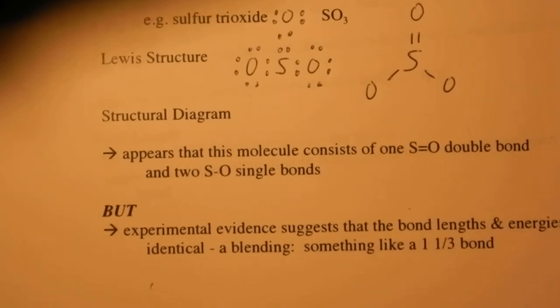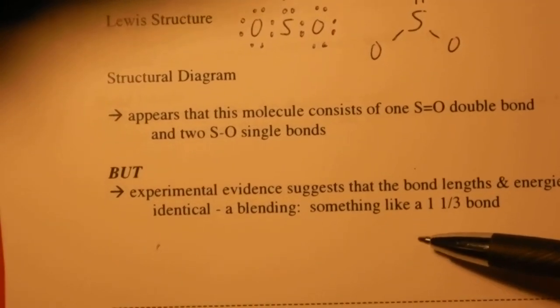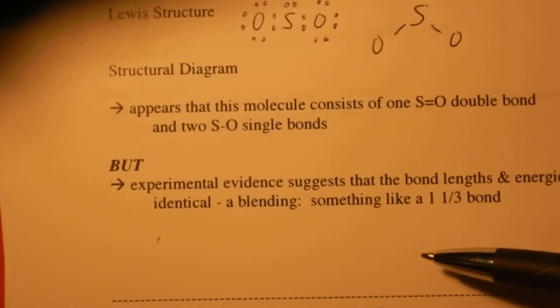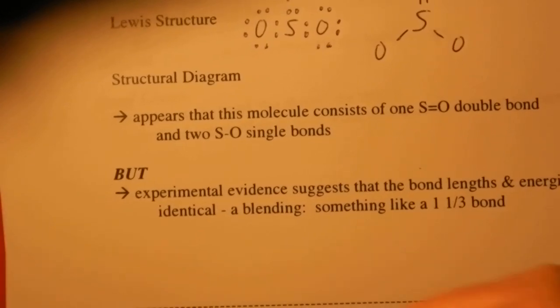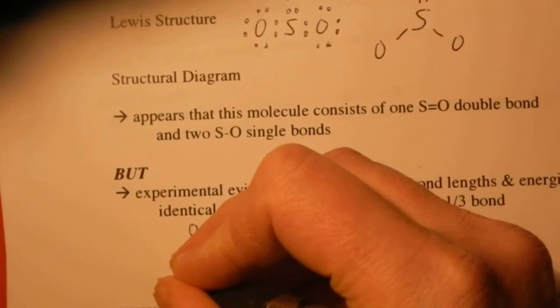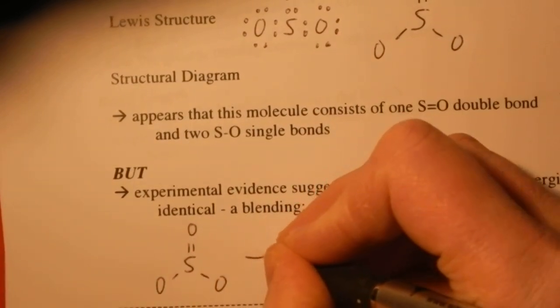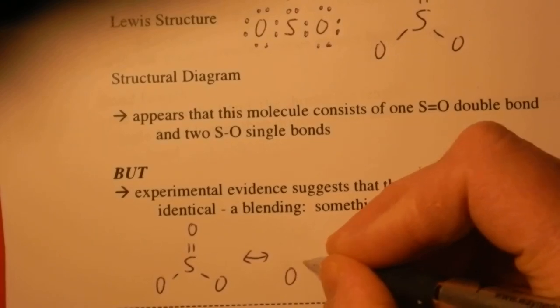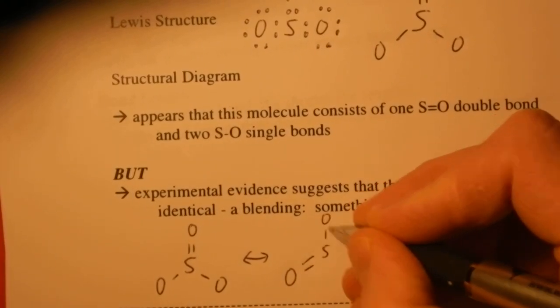In fact, analysis shows that these bonds are all the same. And so, another way of representing this is to simply show that the double bond could be in any of the three locations.